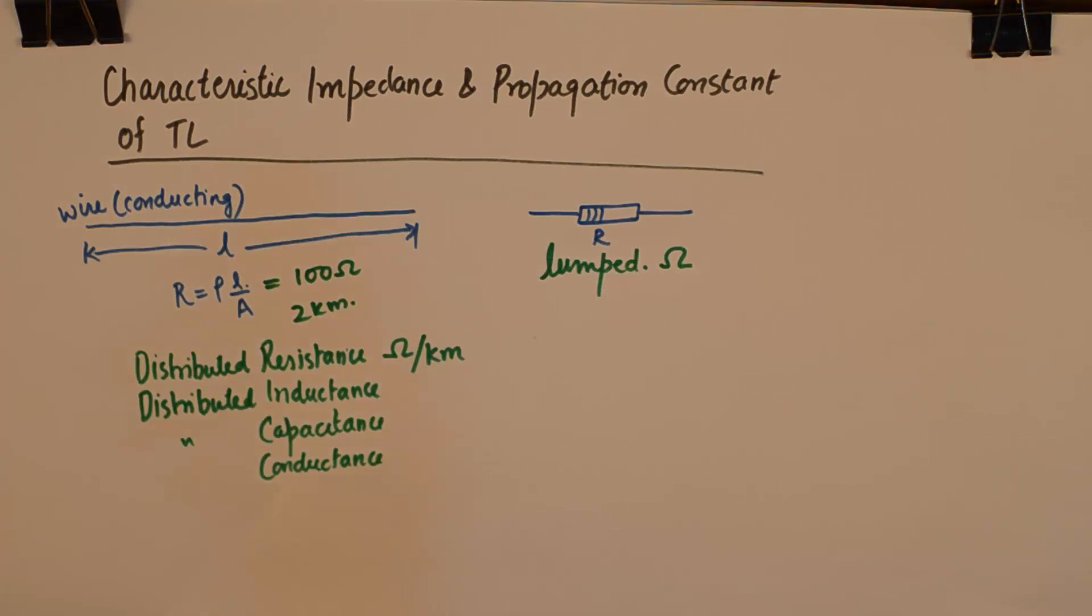Once we are able to comprehend that these properties get embedded into the transmission line because of the virtue of the characteristics of the material, then we can understand that some amount of opposition is offered to the flow of signal over the transmission line. And that opposition, that resistance, that obstruction to the signal is known as the characteristic impedance of transmission line. We have not intentionally put that resistance, we do not wish it to be there but it still is there and that has to be countered for.